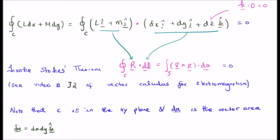Note that the curve C is in the xy plane and that dA is the vector area. The scalar dA is just the area, the vector dA is the scalar area but with a direction perpendicular to the surface of the area. So for example, if you had the scalar area dA here it would be equal to dx dy, but the vector area is going to be equal to dx dy k hat.